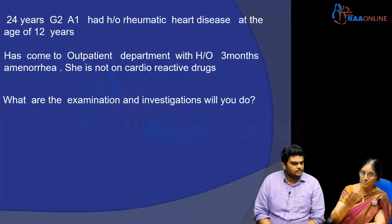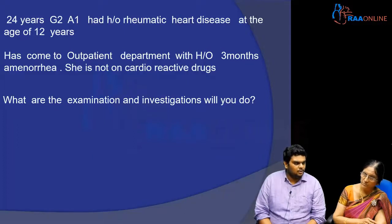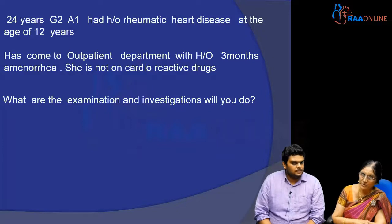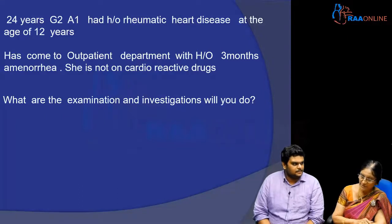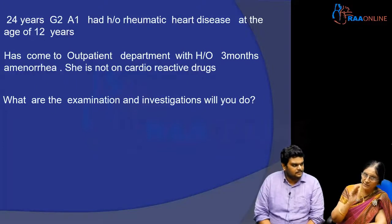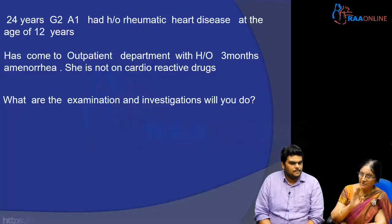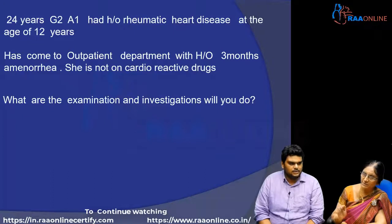For basic investigations, since she is pregnant with three months amenorrhea, I would check her hemoglobin levels, do a urine examination for albumin or urinary tract deposits, and an ultrasound of the abdomen to confirm the pregnancy. Additional blood tests should include blood grouping, Rh typing, HIV, HBsAg, and a baseline blood sugar. These are the routine investigations, and specifically because we suspect cardiac disease, we must do an ECG and obtain a concurrent opinion from a cardiologist at the very first visit to determine which functional class she belongs to.